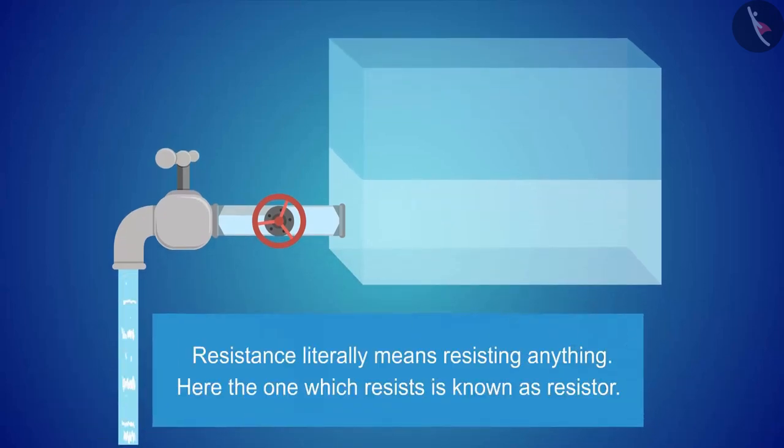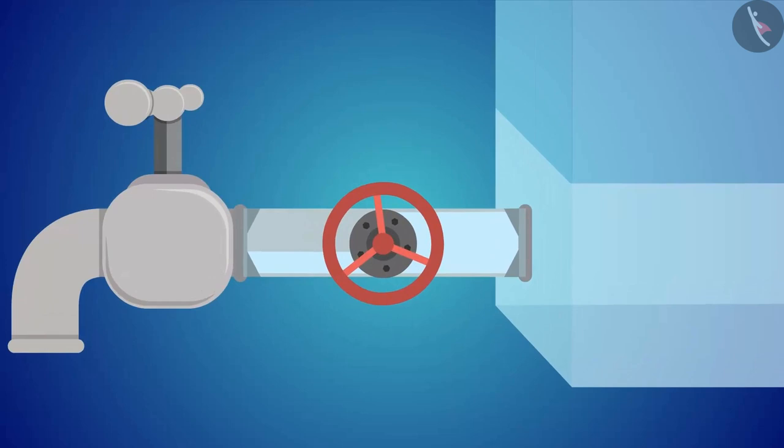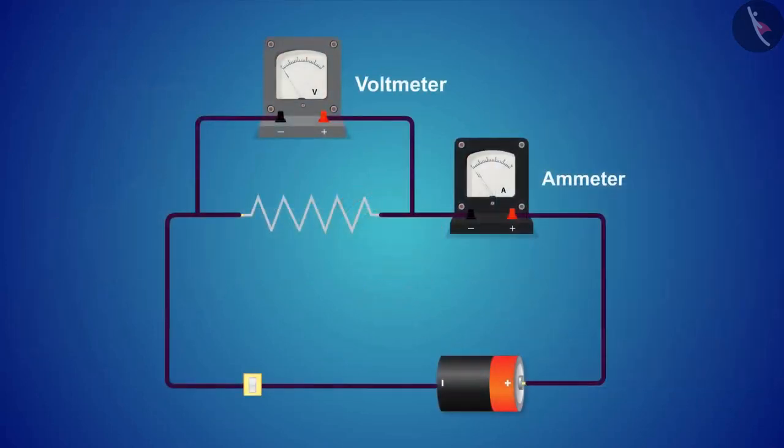Resistance literally means resisting anything. Here the one which resists is known as a resistor. This valve resists water and controls its flow. If this valve is replaced with a resistor in the circuit, then we can see that the resistor will increase or decrease the current in the circuit.